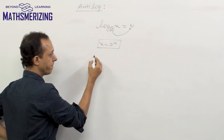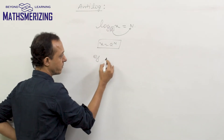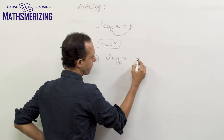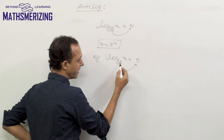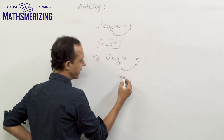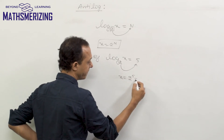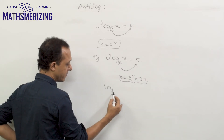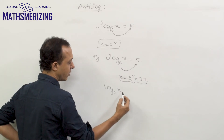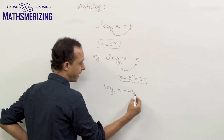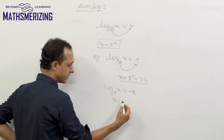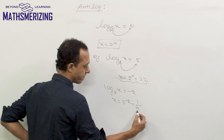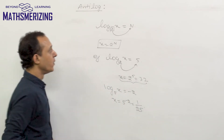For example, if log x base 2 equals 5, we take 2 to the right-hand side and write x = 2^5 = 32. Taking another example: log x base 5 equals −2, then x = 5^(−2) = 1/25.